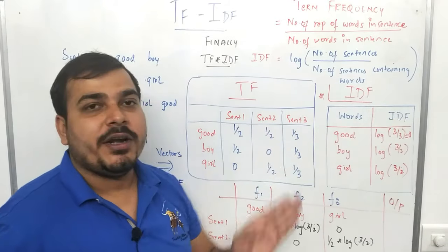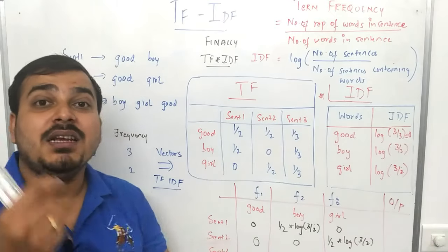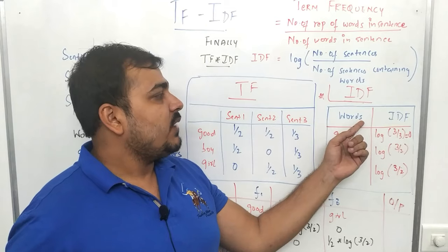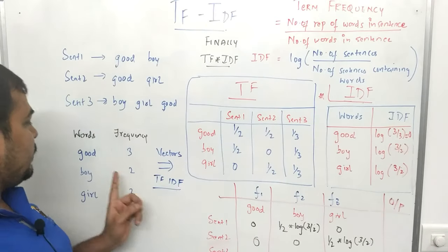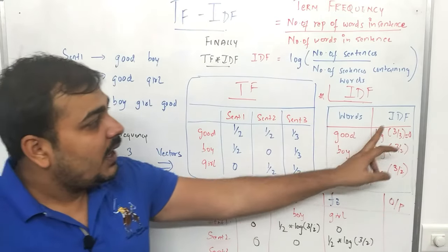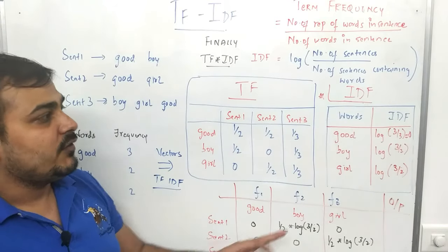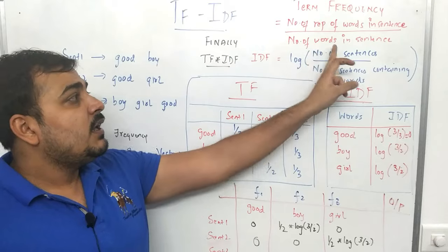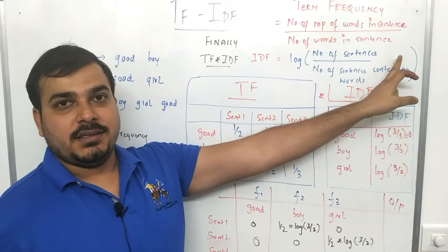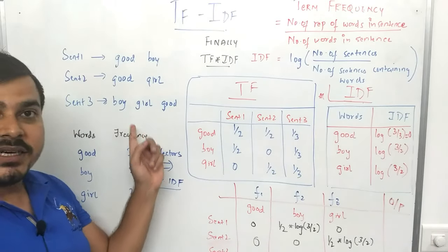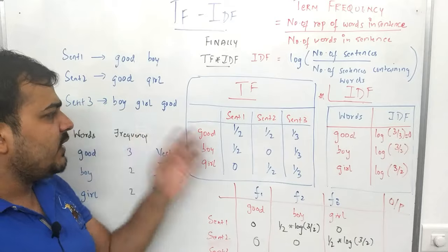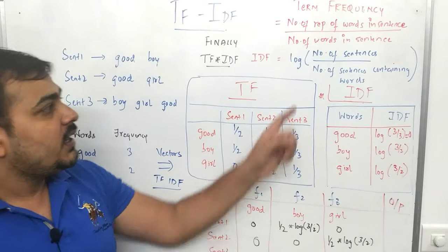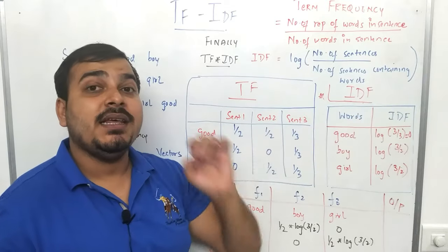Now comes the important thing — inverse document frequency. Inverse document frequency is calculated as: log of (number of sentences divided by number of sentences containing the word). How many number of sentences are there? Three. In every situation for every word, the number of sentences will be three — it will be fixed — divided by the number of sentences containing that word.